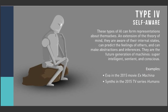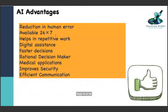Coming to the last level - Self-Aware AI. I hope it doesn't come into picture. They are the future generation of machines: super intelligent, sentient, and conscious. They really have the psychology and emotional quotient as well, so they can make abstractions and inferences on their own. This is really something which can go out of our control. Eva from Ex Machina, the series Humans - we have seen these robots in movies and they created chaos. This fourth level is restricted but we have already invented it.